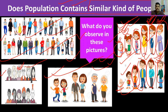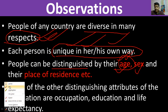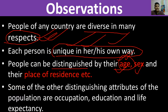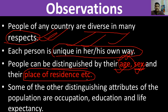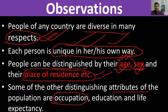People can be distinguished by their age, sex — male or female, which is your biological identity. The word 'sex' refers to your biological identity. And also by their place of residence. Some of the other distinguishing attributes of the population include occupation, education, and place of residence.